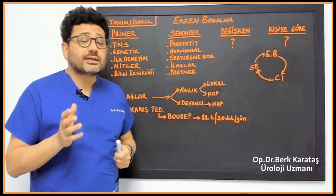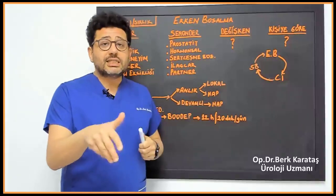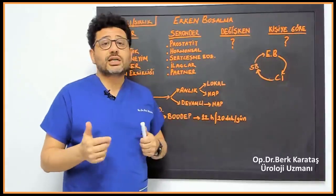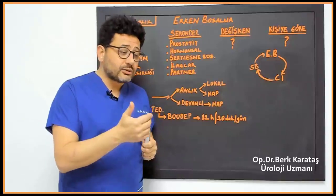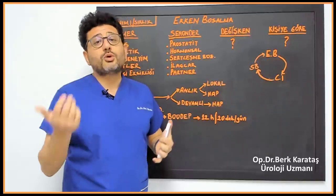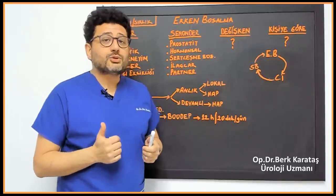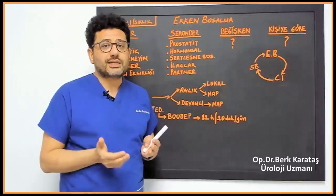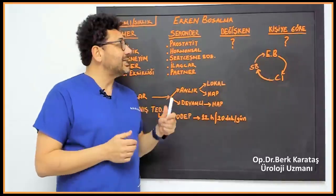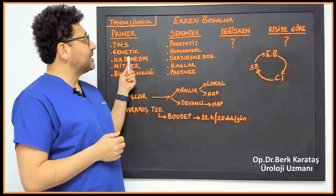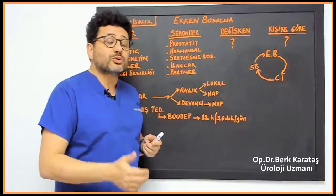The definition of variable premature ejaculation is it changes according to the environment, person and time. For example, the person says that I am with my wife, sometimes I ejaculate as soon as I enter the vagina, sometimes it takes 15 minutes. Of course, many factors are effective here,